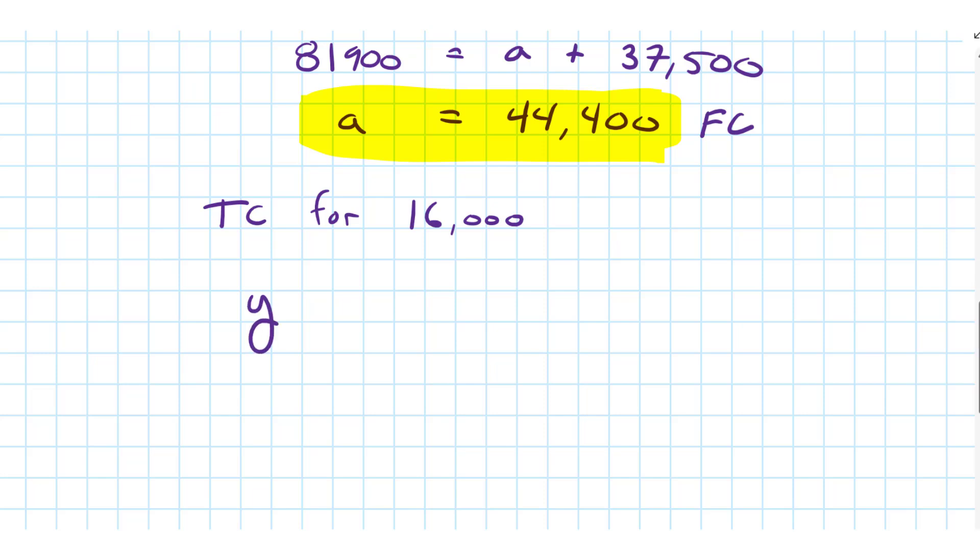That will be y, total cost equals 44,400. 16,000 is above the step point, so we've got to multiply that by 1.15 plus 16,000 times 3.75, the variable cost.